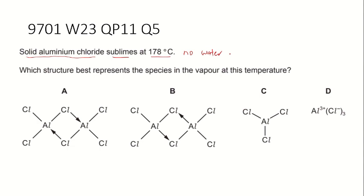Remember, when there's no water, it should be Al2Cl6. Two dimers joined together.